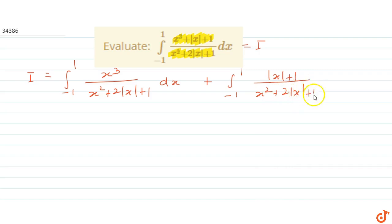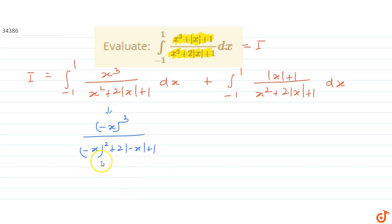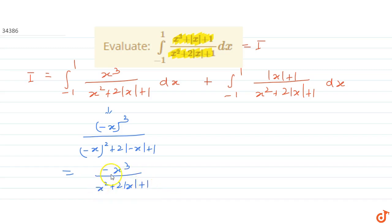For the first part, if we substitute x by -x, what we get is (-x)³ divided by (-x)² + 2|(-x)| + 1, which equals -x³ divided by x² + 2|x| + 1.